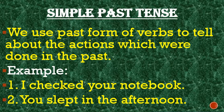Simple past tense: we use the past form of verbs to tell about actions which were done in the past. For example, 'I checked your notebook' — here the word 'checked' is the past form of the verb. I checked your notebook yesterday, meaning I did my work of correction last day. Another example: 'You slept in the afternoon' — the word 'slept' is the past form of the verb.